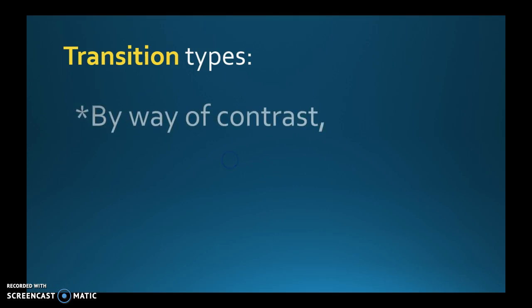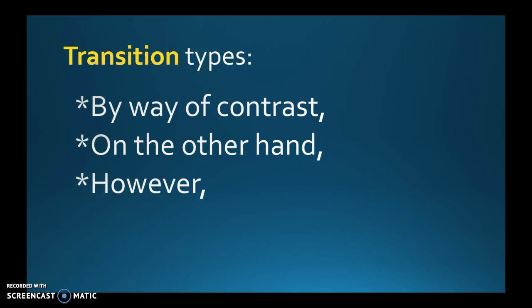As you're going from one thing to the other, use transition words. For example, 'by way of contrast' is a good one — you might say 'the apple comes in many colors; by way of contrast, the orange only comes in the color orange.' Use transition words like these.